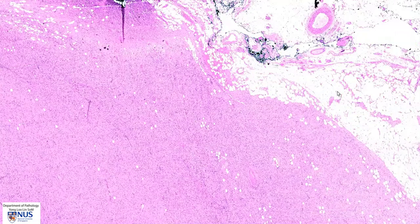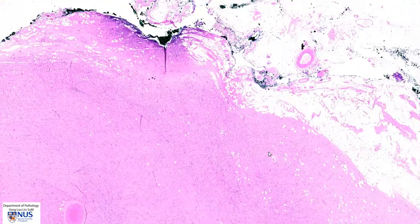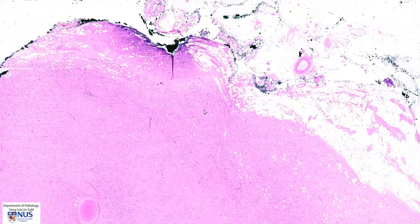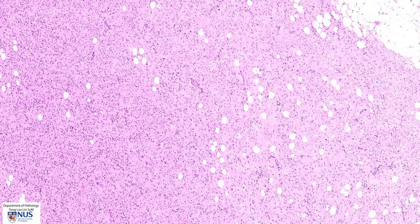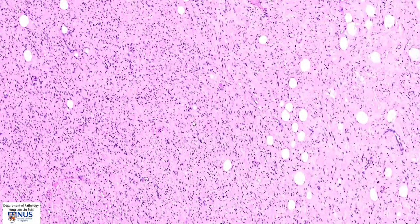This tumor, a ganglioneuroma, is arising in the fatty tissue just outside the adrenal gland. It is not encapsulated, although it is relatively well circumscribed. And we can see that there is some fatty tissue or adipose tissue in the tumor.